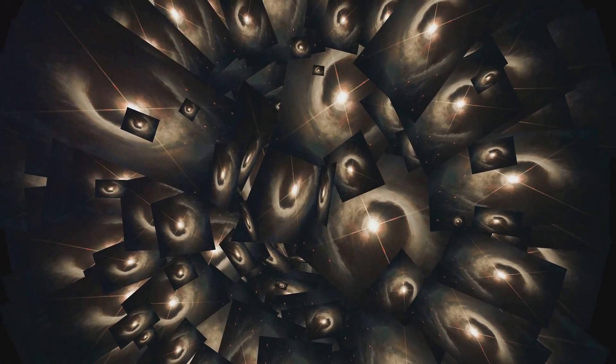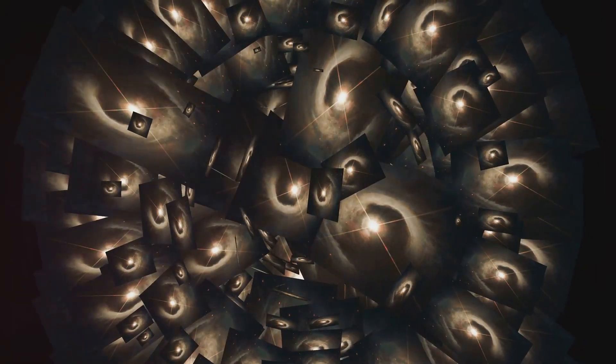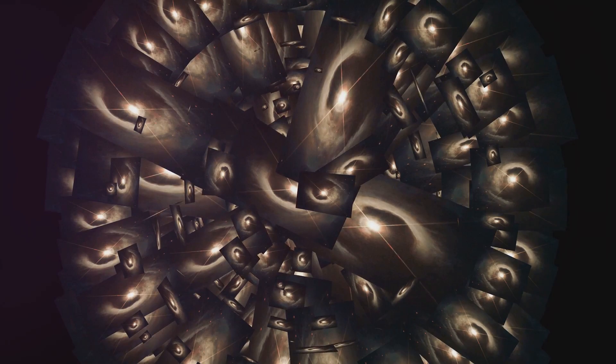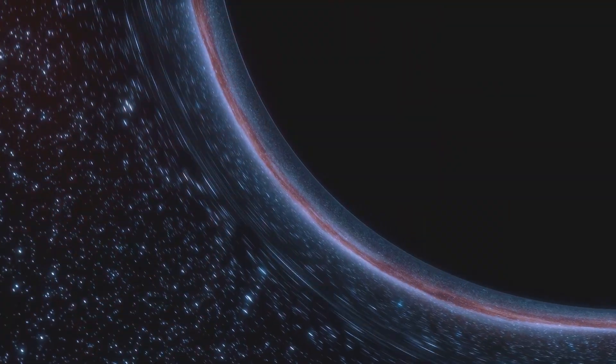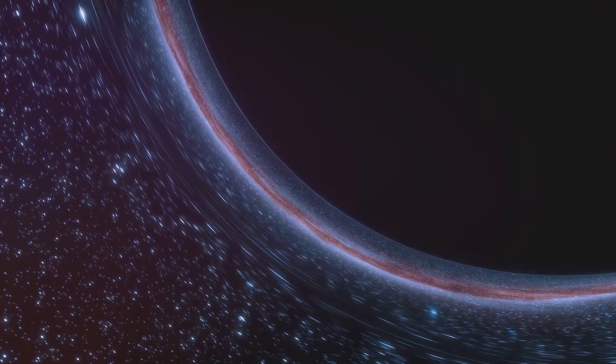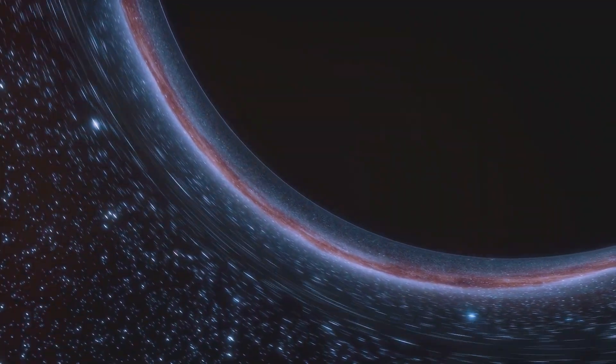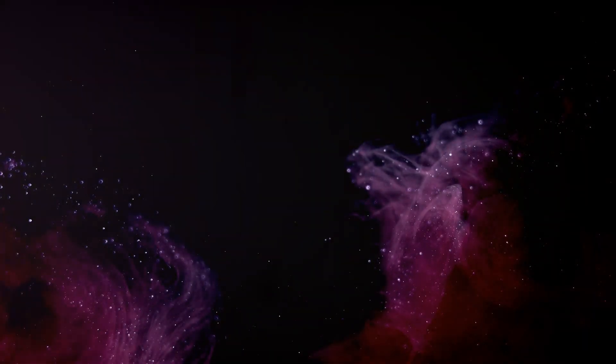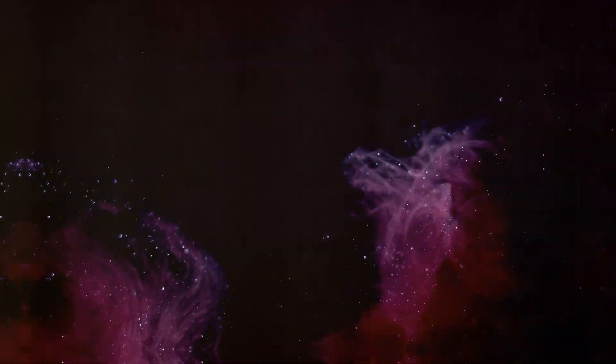These gravitational lensing maps have revealed that dark matter forms a vast cosmic web, with filaments and clumps connected by less dense regions. These maps are crucial for understanding the role of dark matter in the formation of galaxies and the large-scale structure of the universe. They provide a glimpse into the invisible scaffolding upon which the visible universe is built.